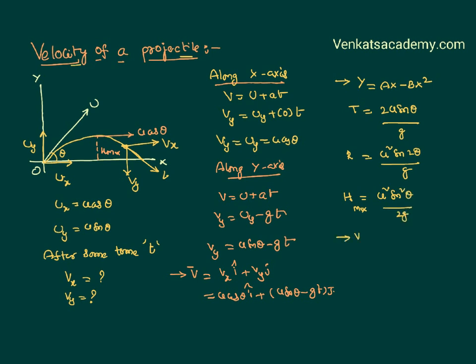And now, I have calculated the velocity of a projectile at a certain time as u cos theta i cap plus u sin theta minus gt j cap, having both x and y components. We will continue this discussion further. Thank you. Cheers.